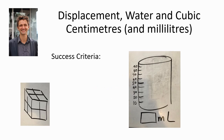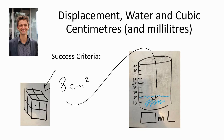Our success criteria probably looks a bit like this. Let's say we've got a beaker with 20 millilitres of water in it. I've got an object made out of cubic centimetres over here — you can look at that as 8 centimetres cubed, because 1, 2, 3, 4, and on the back there's 4 as well. So if I put 8 centimetres cubed into this beaker, it's going to go all the way up to 28 millilitres — that's 20 millilitres plus 8.